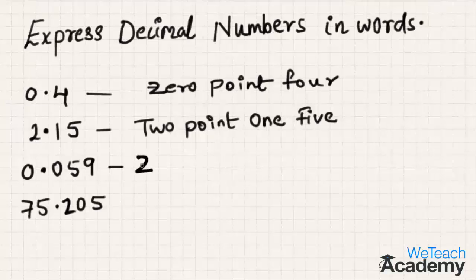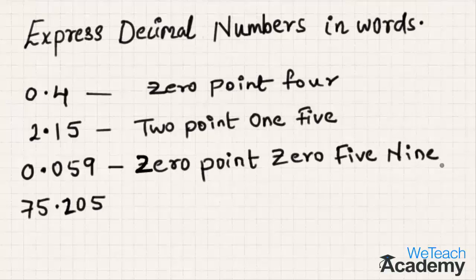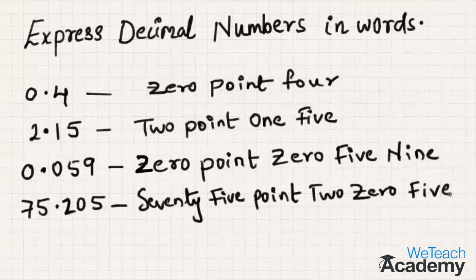The third example can be expressed as 0.059. For the fourth example, this can be expressed as 75.205. You cannot express this as 75.205 read together — the right way is 75.205 digit by digit, as the decimal part must always be expressed separately.